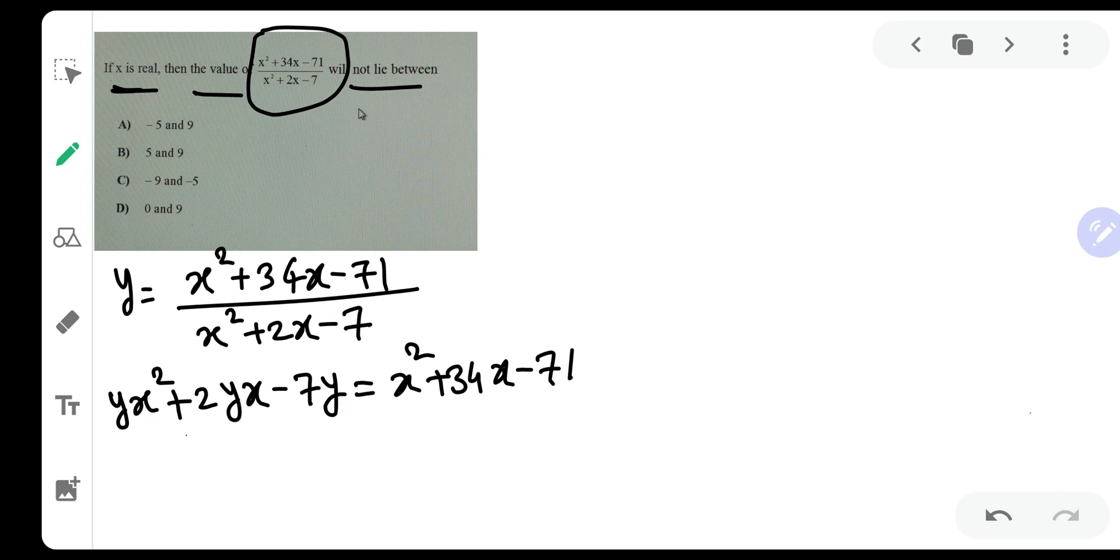Now why am I doing so? Because I need some expression in x which will help to get ultimately the expression in y. So if I take x square common, I will get (y minus 1) x square plus (2y minus 34)x minus 7y plus 71 equal to 0.